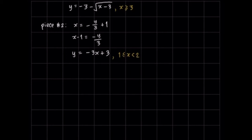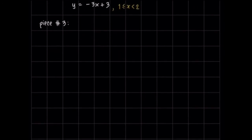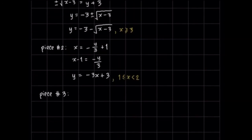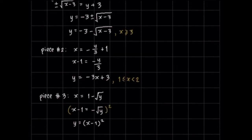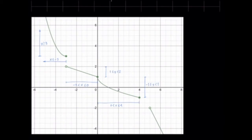So we have two pieces of our inverse. Let's find the third piece. Interchanging x and y again, we write x = 1 − √y. Subtracting 1 from both sides, then squaring both sides, we get y = (x − 1)². Note that even if the square root of y was negative, since we squared it, it becomes positive. Looking at our original graph, the third piece has y values from −1 inclusive up to 1 exclusive.